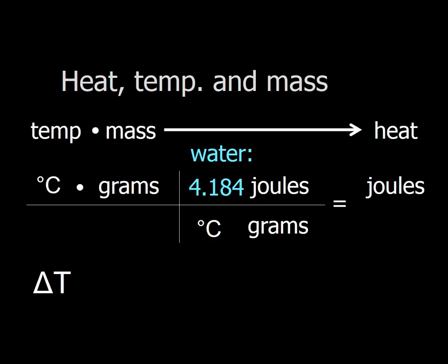All right. So back to water. So now we have an equation to calculate heat. We can take the change in temperature, delta T, multiply it by the mass, represented as m, and multiply that by the specific heat symbolized with s. And that will enable us to calculate heat.